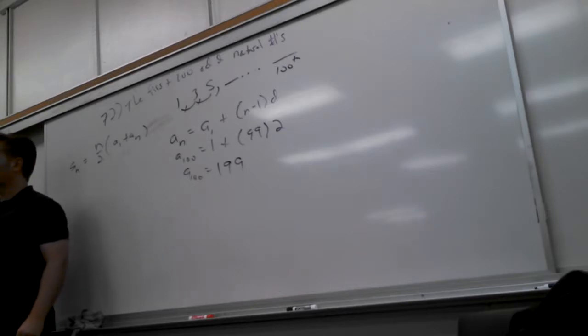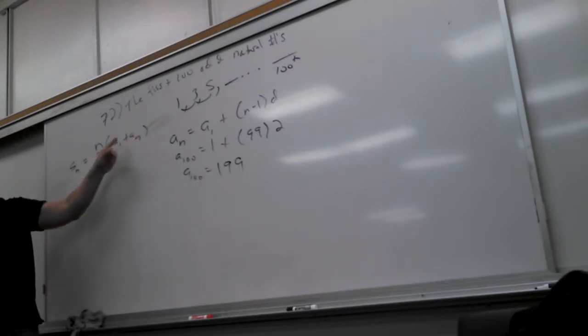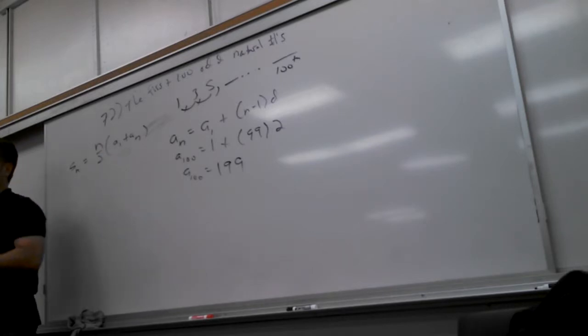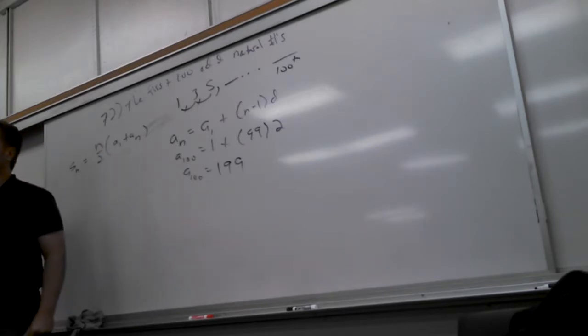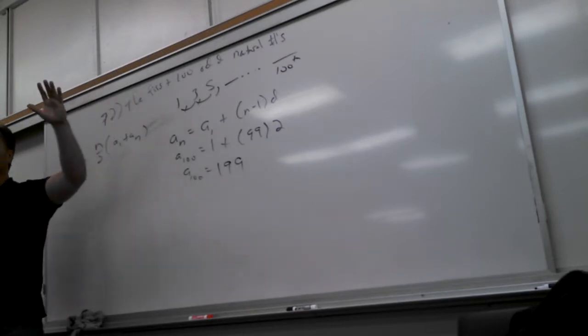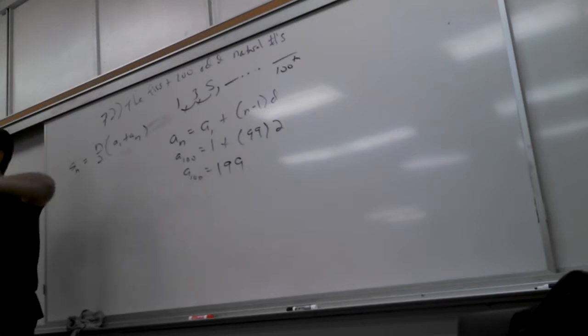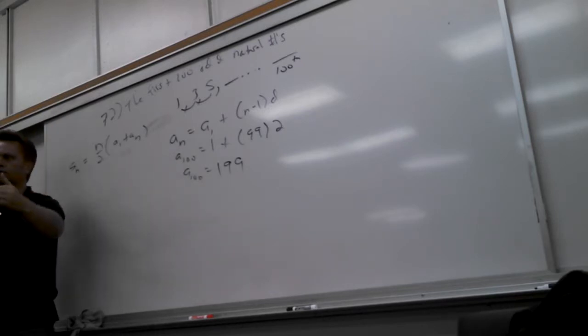And now you just got to plug and check. So now I know the 100th number, I can put it there. I know the first number, I can put it in. And I know that there's 100 of them. So don't let that confuse you. If I do the first 100 numbers, that's 1 through 100. But this is the first 100 odd numbers. So that's going to go past 100.